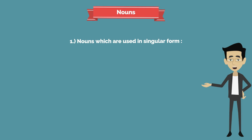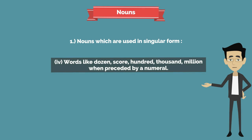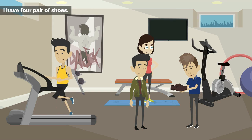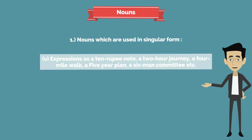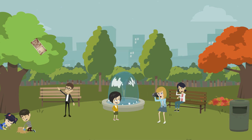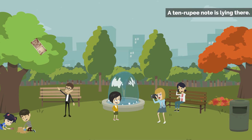Fourth rule: words like dozen, score, hundred, thousand, million, when preceded by a numeral, retain the same form. Example: 'He bought 10 dozen oranges.' 'I have four pair of shoes.' Fifth rule: expressions like a 10-rupee note, a two-hour journey, a four-mile walk, a five-year plan, a six-man committee, etc. Example: 'A 10-rupee note is lying there.'